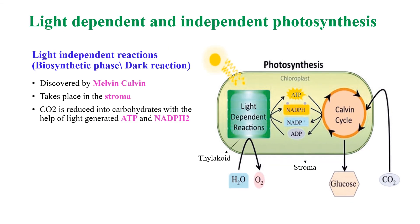The second step of photosynthesis is the light independent reaction, discovered by Melvin Calvin, so it is also known as the Calvin cycle. Light independent photosynthesis takes place in the stroma. During this process, carbon dioxide is reduced into carbohydrates with the help of ATP and NADPH generated by the light dependent reactions. In summary, the light dependent reactions produce ATP and NADPH, which are further used by the light independent reactions to produce carbohydrates.